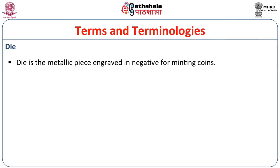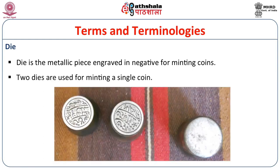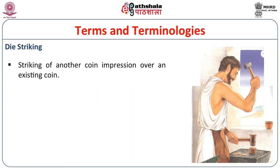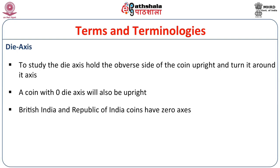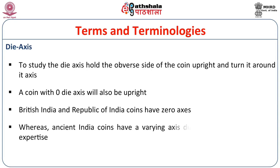A die is the metallic piece engraved in negative form for minting coins; two dies are used for a single coin. Die striking refers to striking a coin impression over an existing coin. For die axis, hold the upper side of the coin upright and turn it around its axis — a zero die axis coin will also be upright. British and Republic of India coins have zero axis, whereas ancient Indian coins have a varying axis due to lack of technical expertise.